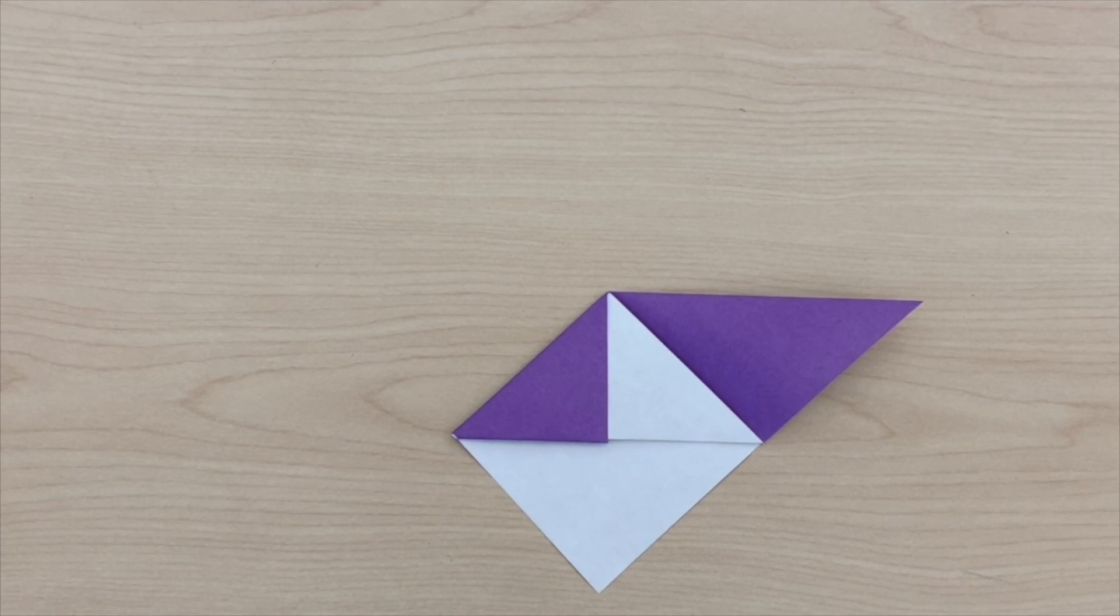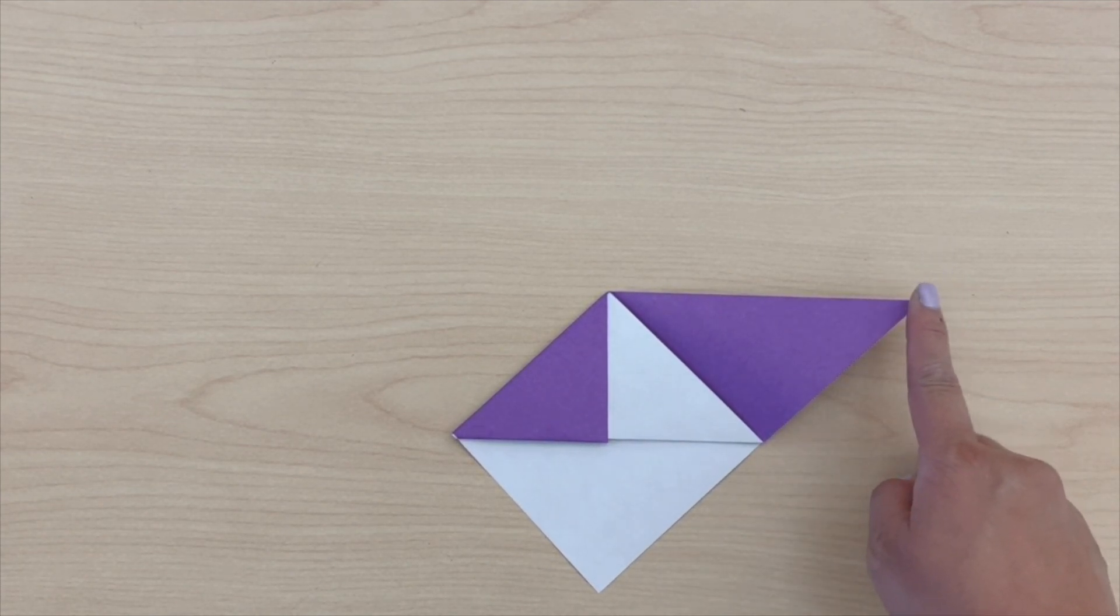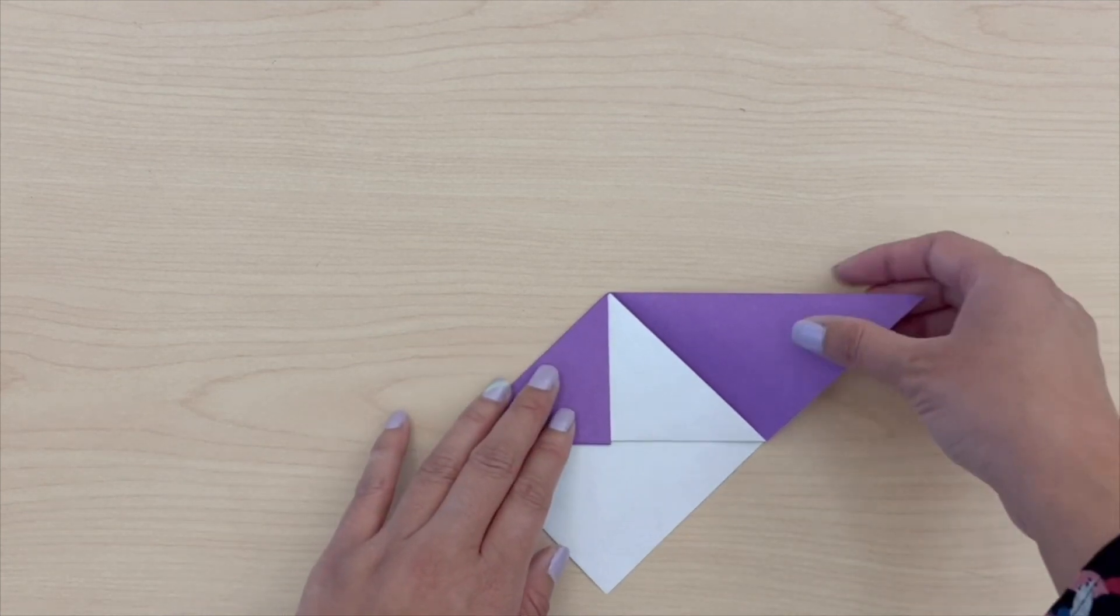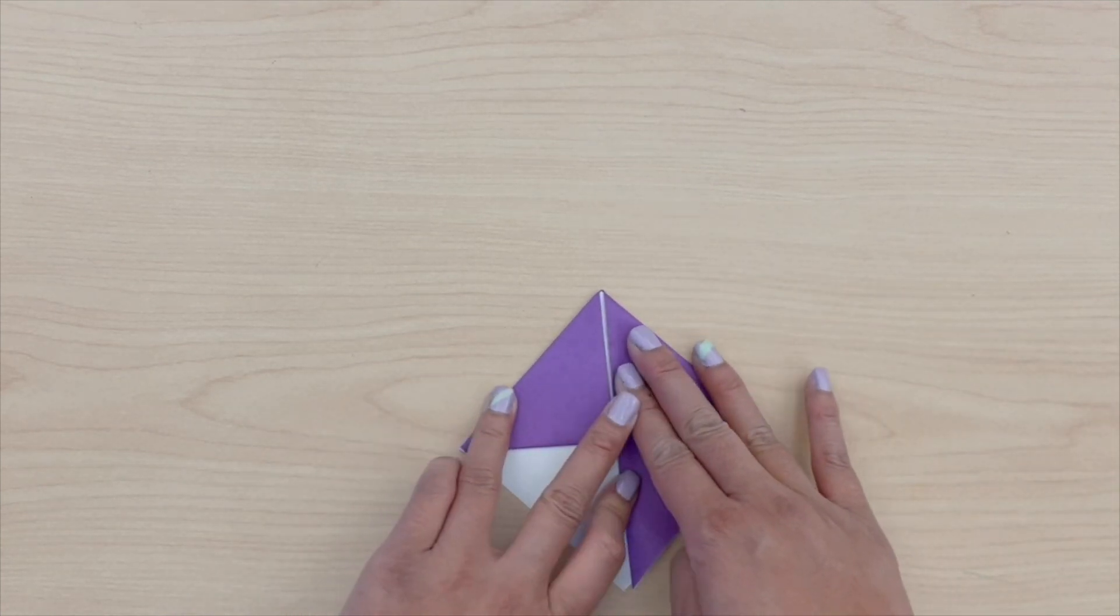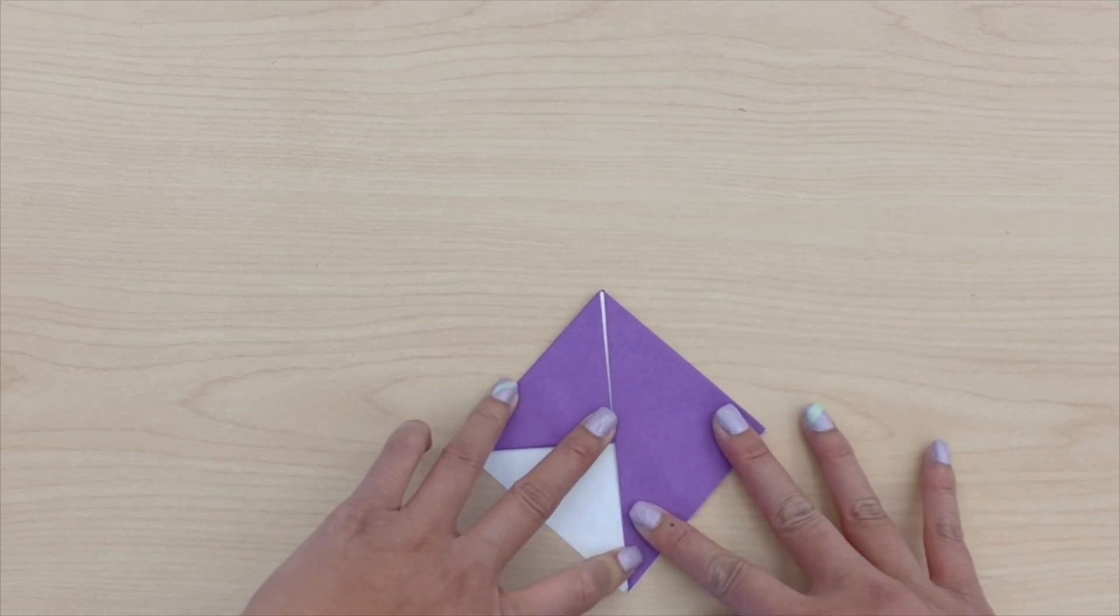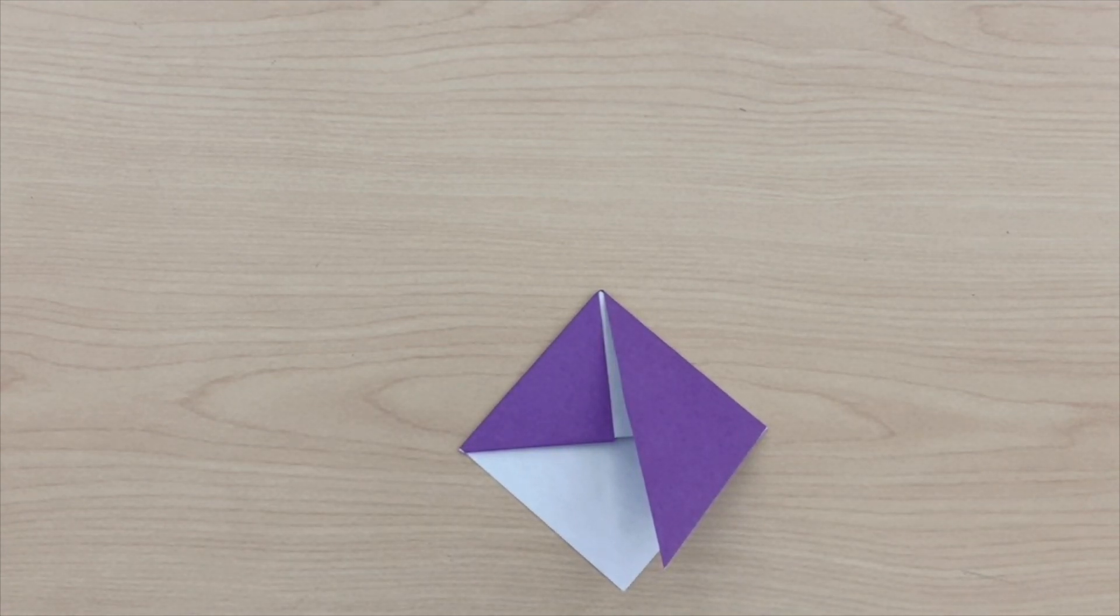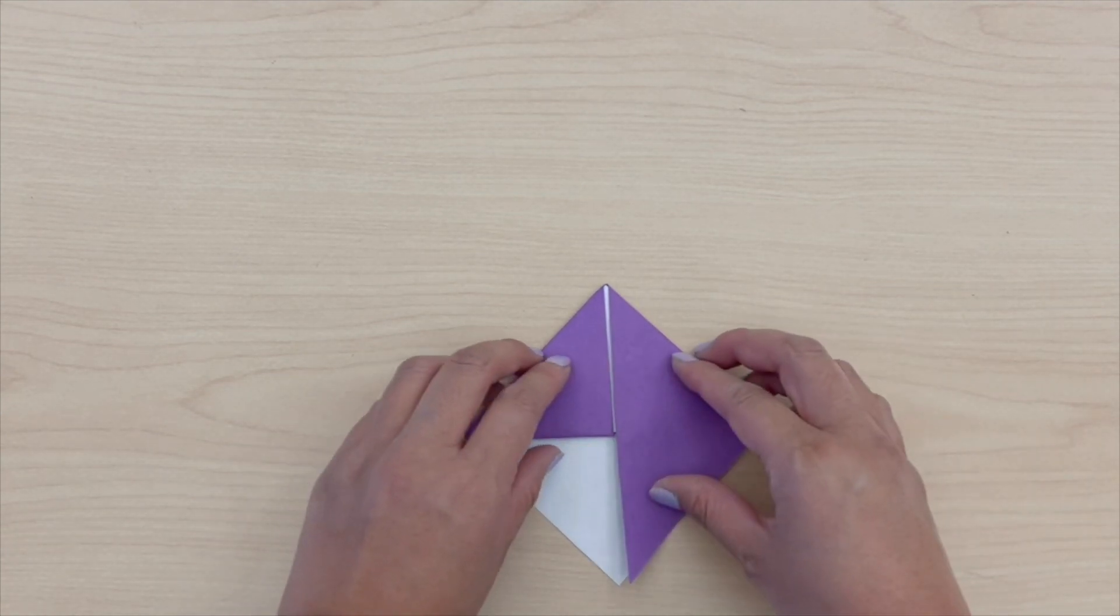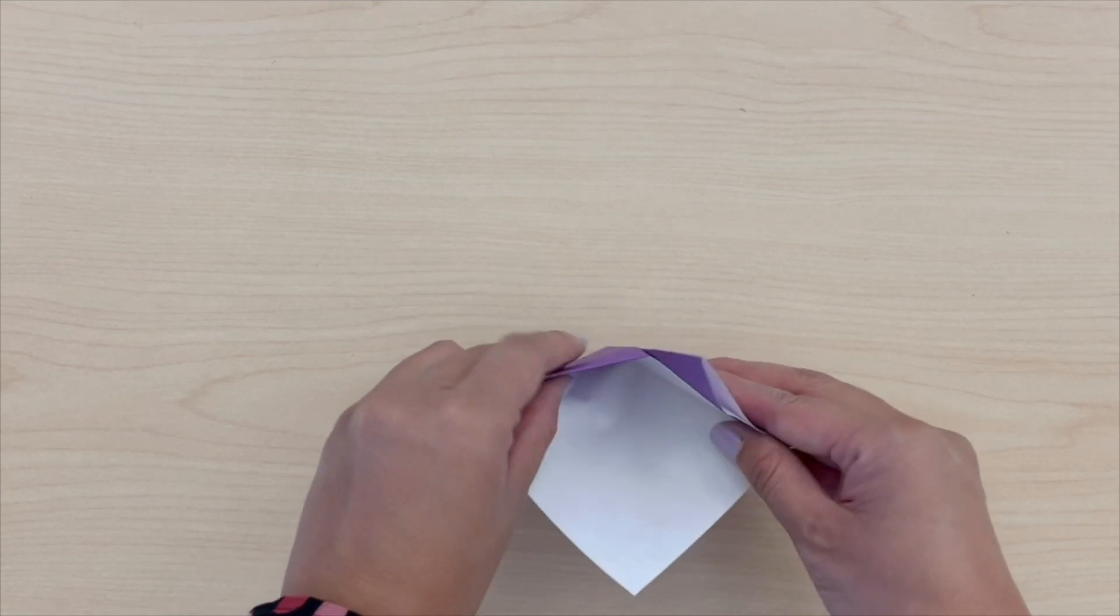You will then do the same on the opposite side. Take this point and refold it down to meet the bottom point. Finally, you will tuck the flap into the pocket.